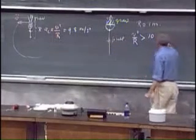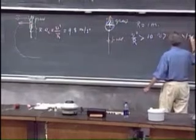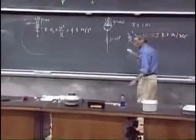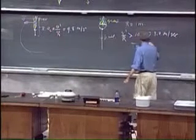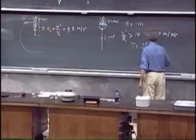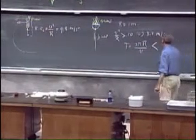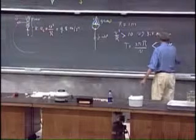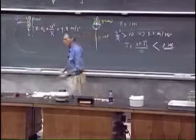The time to go around is 2π r divided by this velocity, so this time to go around then has to be less than two seconds. So if I swing this around in less than two seconds, I would be okay.